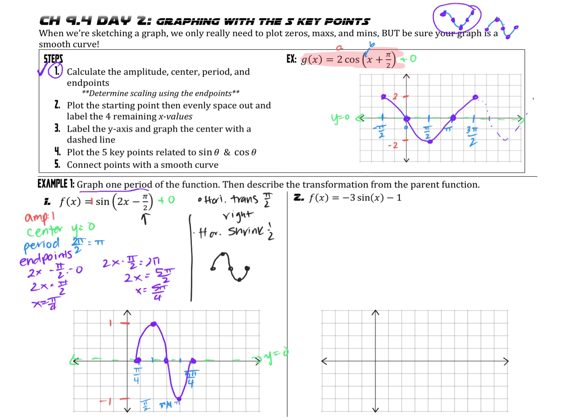Really focus on doing all the math to identify the key information, graphing your center, and setting up the lines on your axes. This graph probably would have been easier if I had spaced it out more. Focus on setting it up, labeling everything, and then plot those five key points and graph them. Let's go ahead and look at number 2. Go ahead and pause the video to identify the key information on your own, then unpause and see how you did.